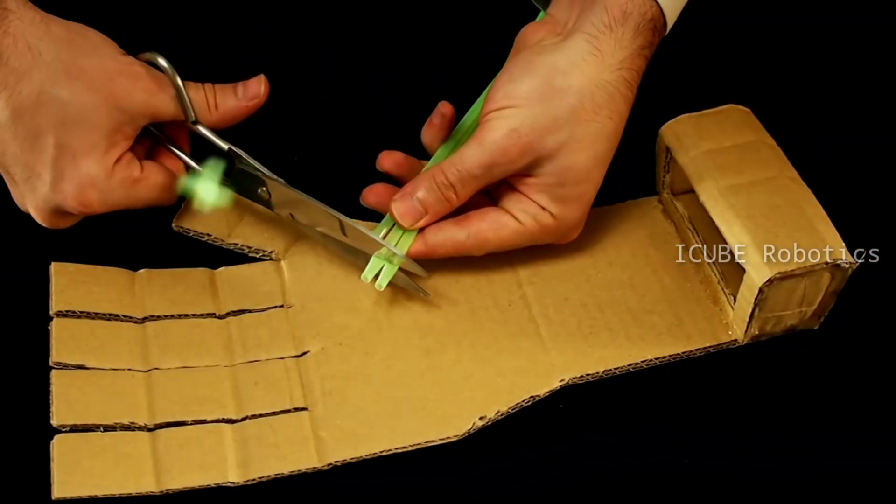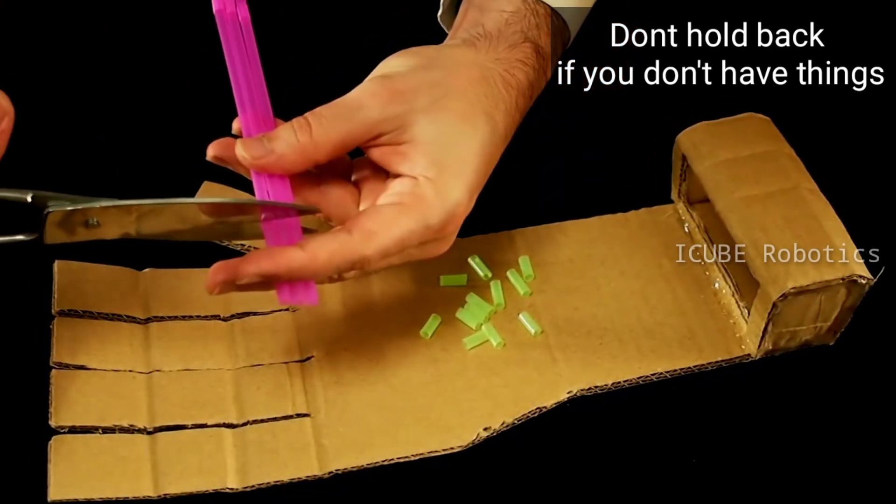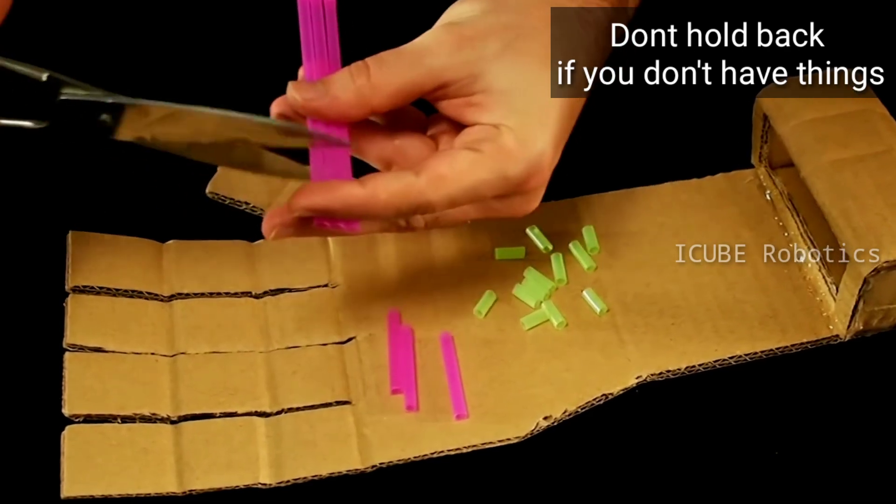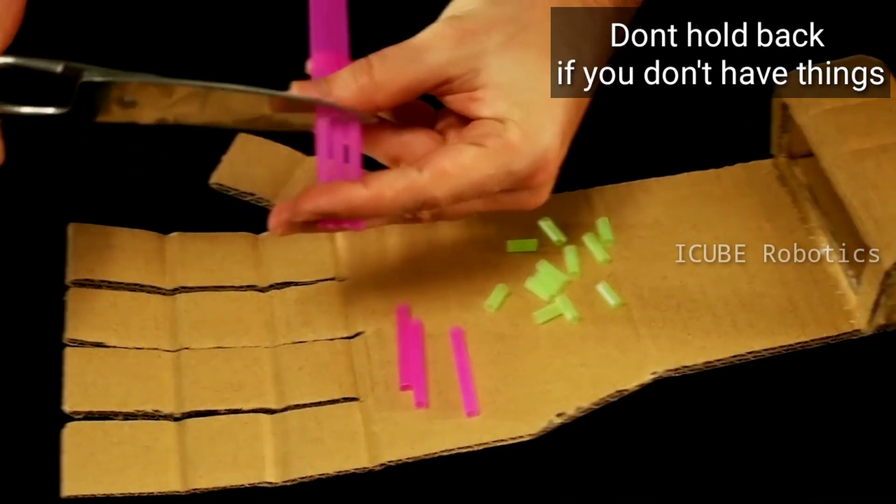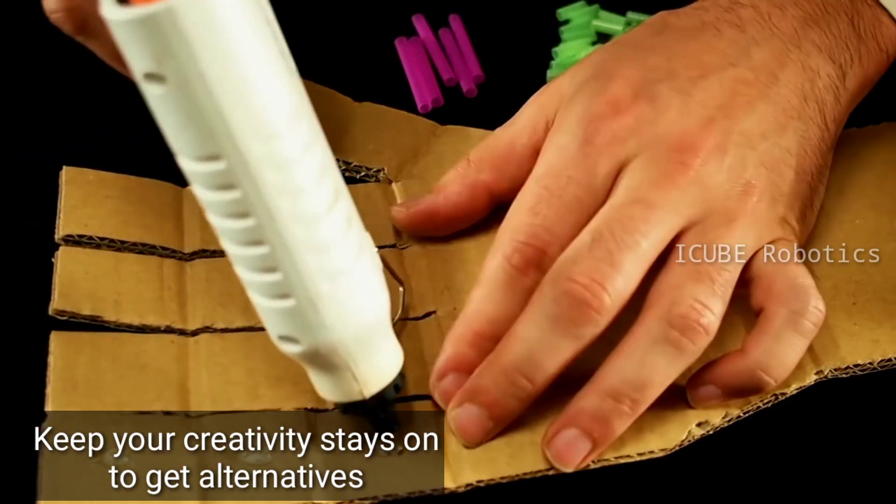Now cut the straw into small small pieces like this. If straw is not available, you can even use a newspaper and roll it to make a straw-shaped structure, and even you can use that newspaper roll and fix with glue like this.